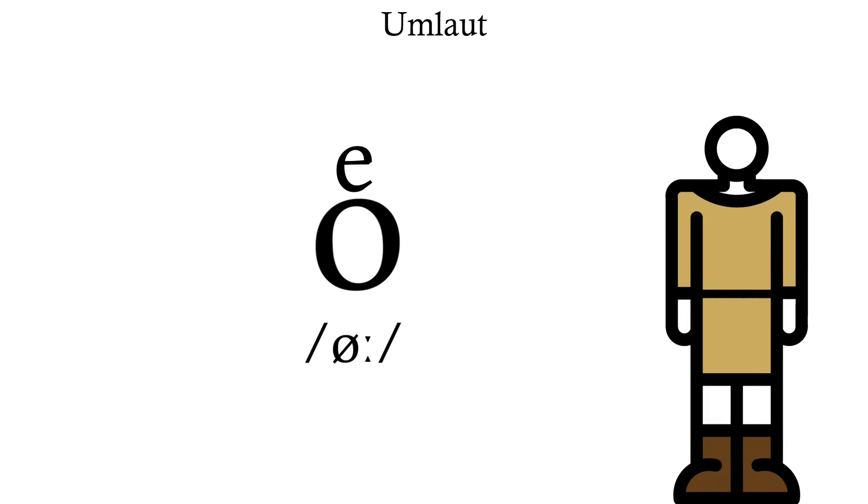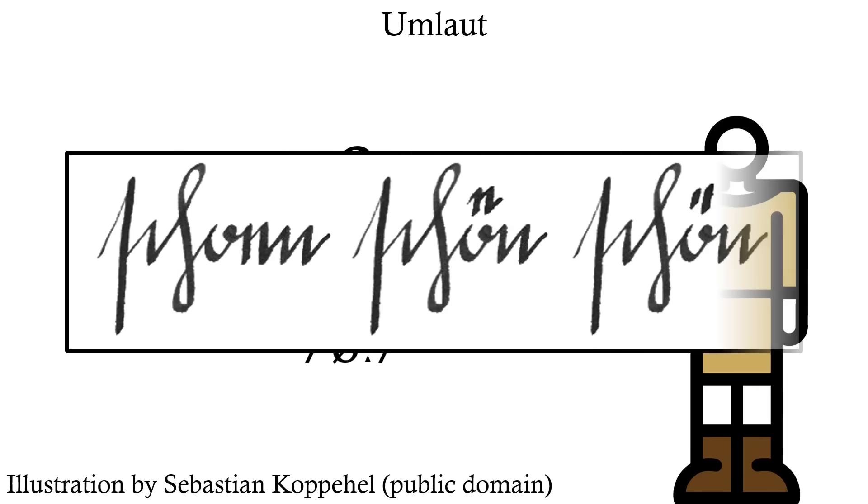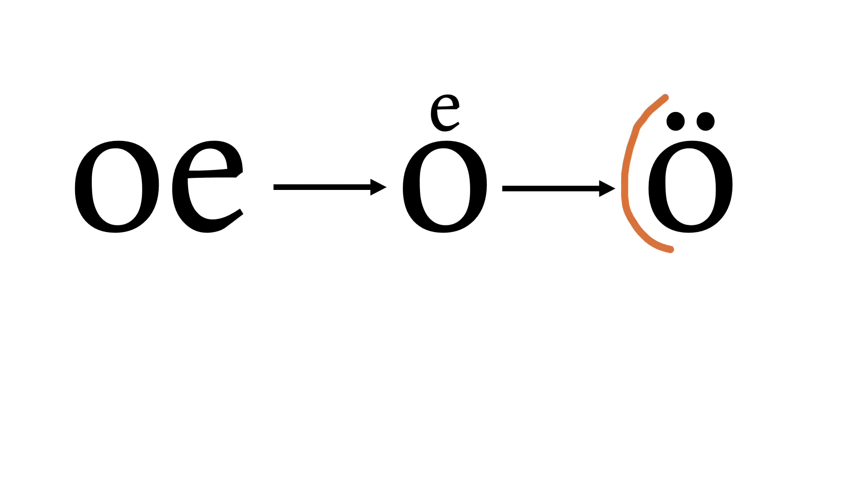Already by the late middle ages that E was sometimes being replaced by a double dot for the sake of efficiency in handwritten documents. And through the early modern period, the superscript E slowly died out, disappearing first from handwriting and then from print, being replaced with the modern Umlautzeichen.